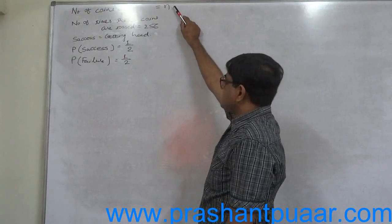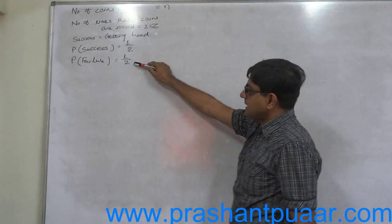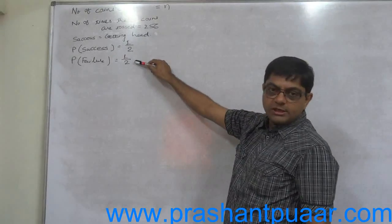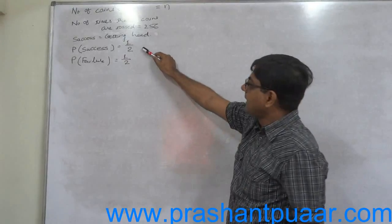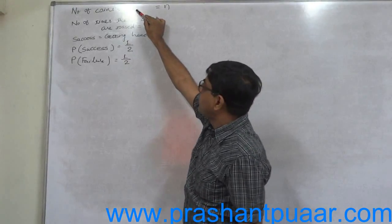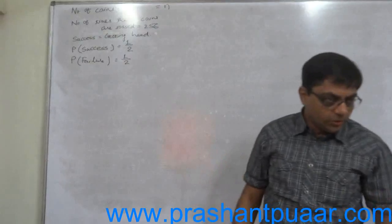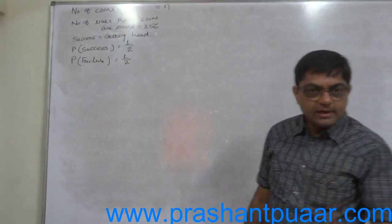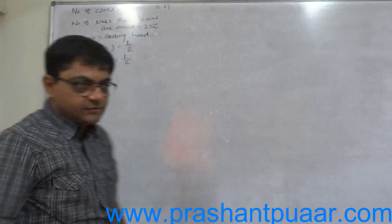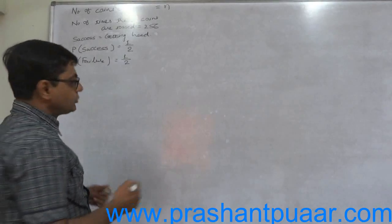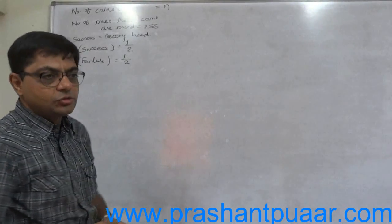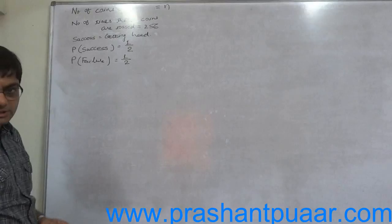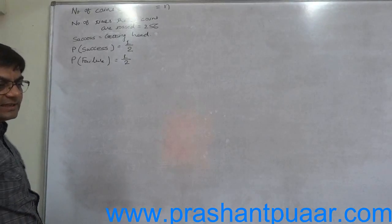Number of trials finite and fixed. Probability of success and probability of failure remain constant in each and every trial. Getting heads or tails on any one or more coin is independent of each other. That means the data follows or satisfies conditions of binomial distribution. So the problem can be solved through the help of binomial distribution.